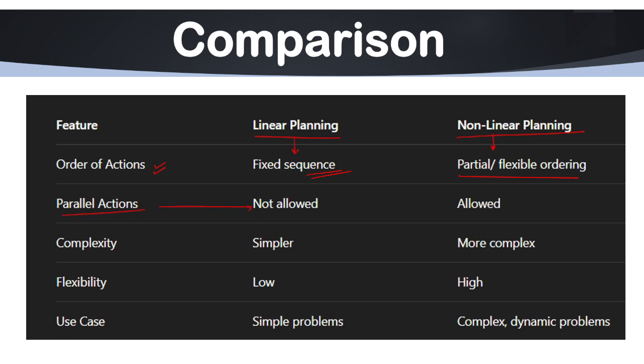Parallel actions, that means simultaneous works, are not allowed in linear planning, whereas it is allowed in non-linear planning. If we talk about its complexity, linear is very simpler and non-linear is more complex. Flexibility is low in linear planning system. And if we talk about flexibility in non-linear, it is highly very flexible because we can do more than one task at the same time in non-linear planning. Linear is used for simple problems, non-linear is used in case of complex and dynamic problems.